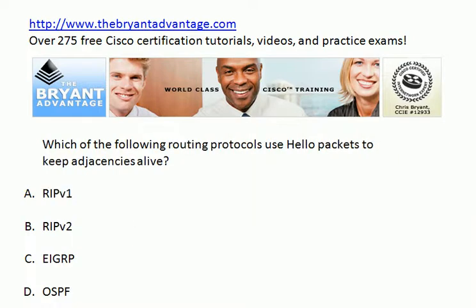Which of these routing protocols use hello packets to keep adjacencies alive? These are the four routing protocols you learn about in the CCNA curriculum: RIP versions 1 and 2, then EIGRP and OSPF. Which one or ones use hello packets?